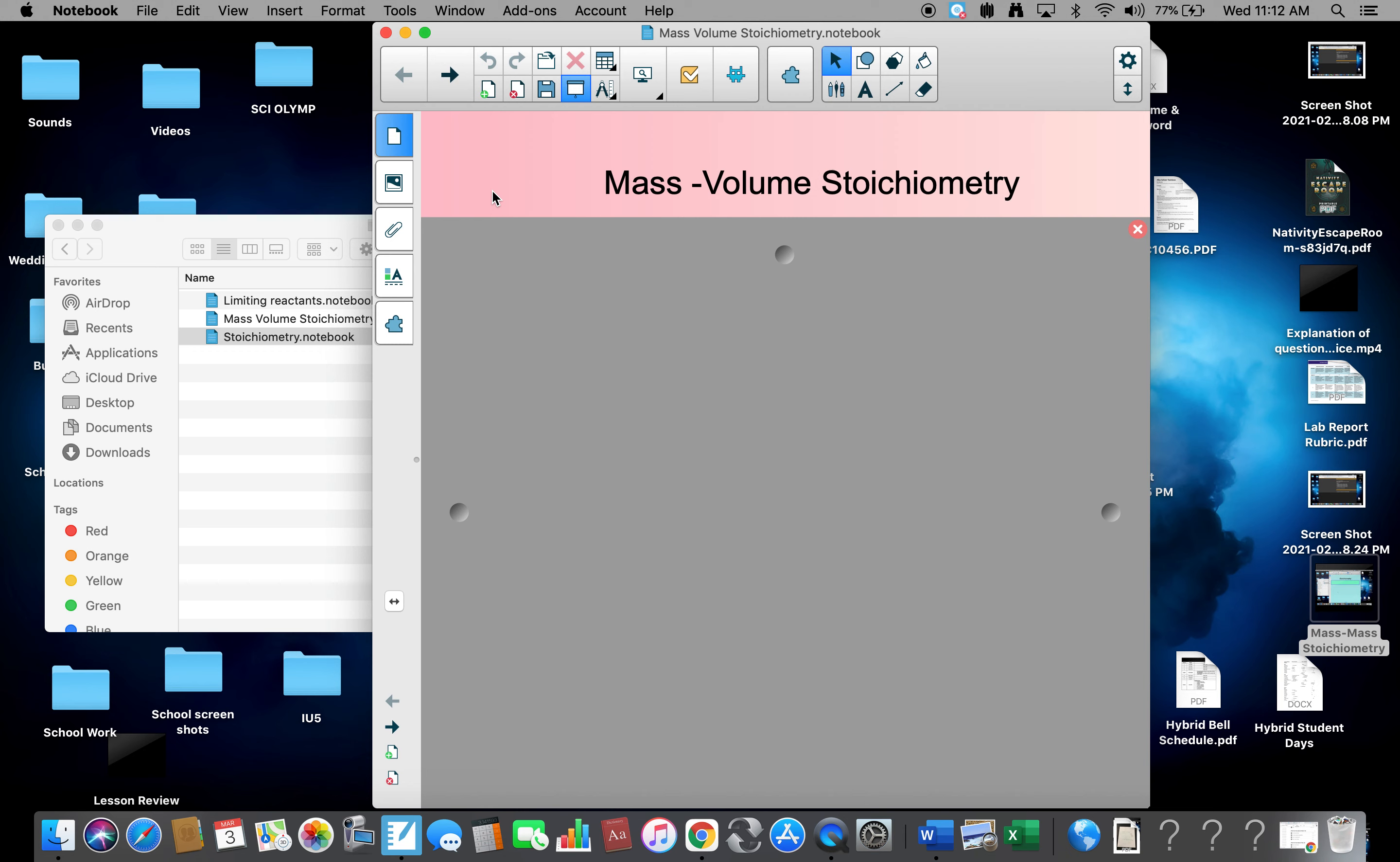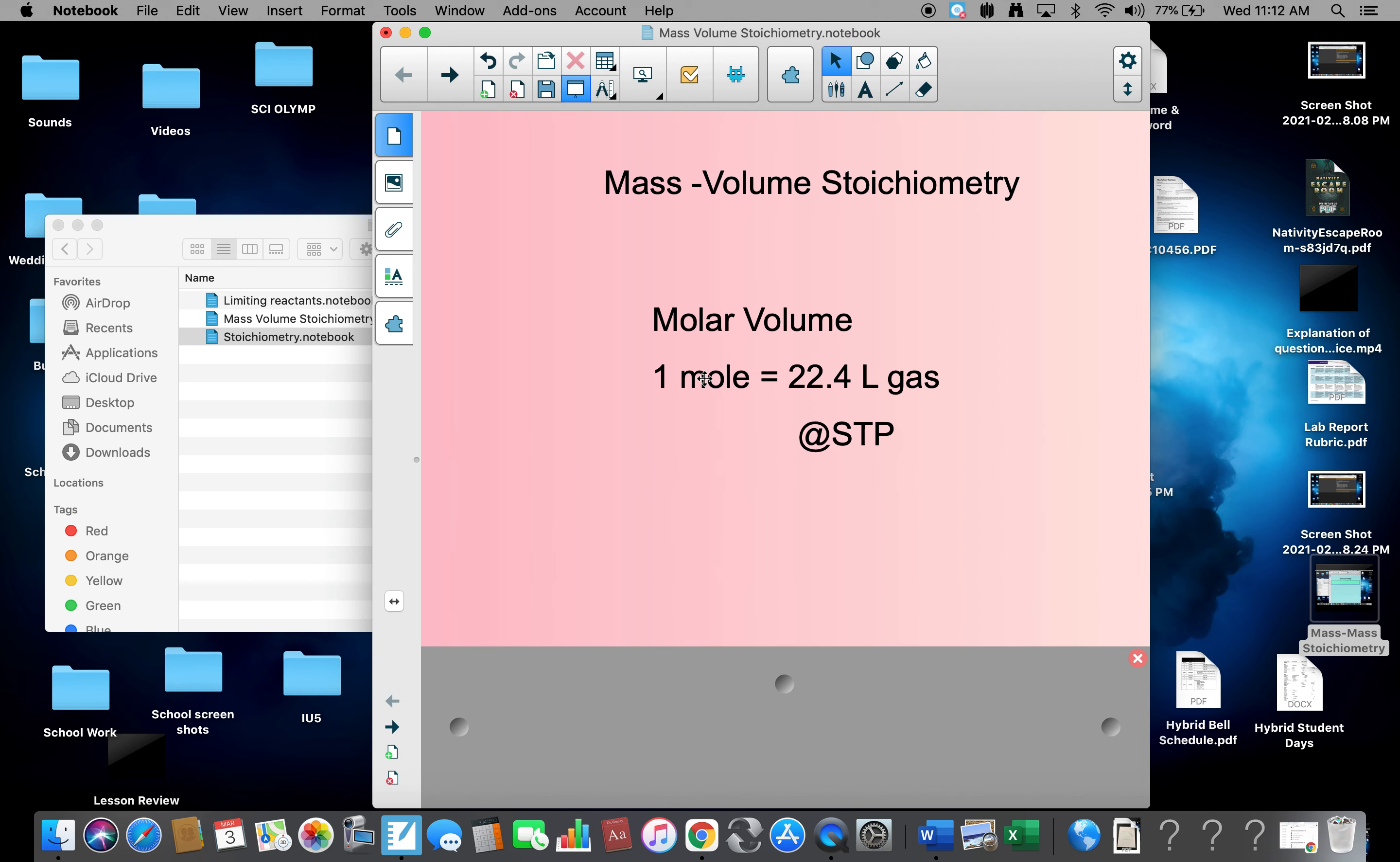Yesterday we did mass-mass stoichiometry. Today we're doing mass-volume stoichiometry. The difference here is we're dealing with molar volume. And remember, molar volume: one mole is 22.4 liters of any gas at STP. So that's the difference. Instead of using atomic mass or formula mass, we're going to use molar volume. So let's look at a problem.